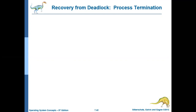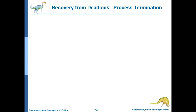So basically there are two ways to do this. The first method is to terminate some of the processes which are involved in the deadlock, so that there is no circular wait. If we break the circular wait, obviously the system will come out of the deadlock state. So that is the first method.